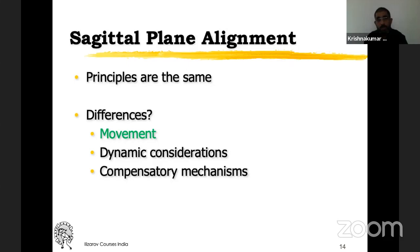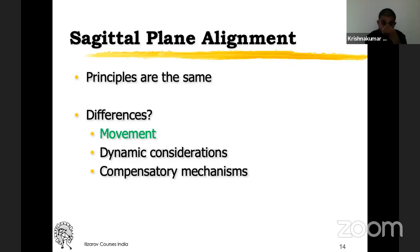In sagittal plane alignment, the principles of correction are the same, but what are the differences? When you take the lower limb, only the hip joint has any movement when looking from the coronal plane. Whereas all three joints — hip, knee, and ankle — have movements when looking from the sagittal plane: hip has flexion-extension, knee has flexion and extension, and ankle also has movement in the same plane. So we have to consider movement when doing deformity corrections — there are dynamic considerations. Deformities are compensated to an extent by the movement of these joints.